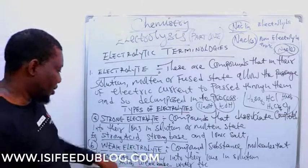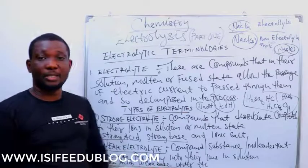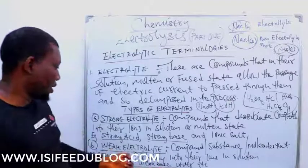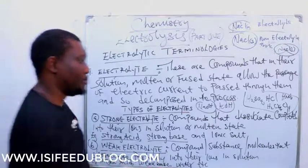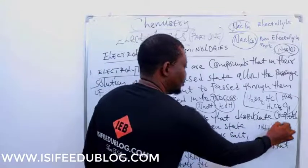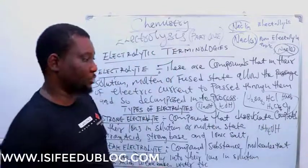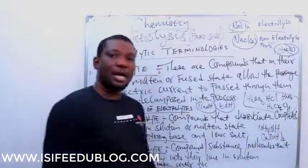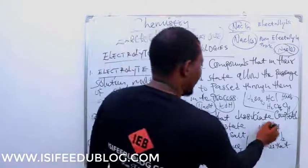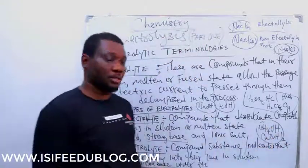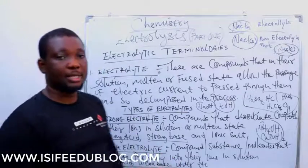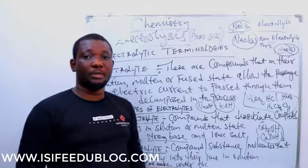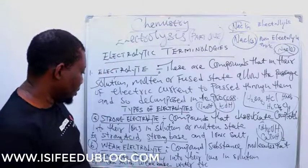Weak electrolytes are the reverse of strong electrolytes — they are compounds that dissociate only to some extent. These include weak acids, weak bases, and water, which is a typical weak electrolyte. Examples of weak electrolytes include weak bases like ammonia, ammonium hydroxide, calcium hydroxide (lime water), and sodium carbonate.